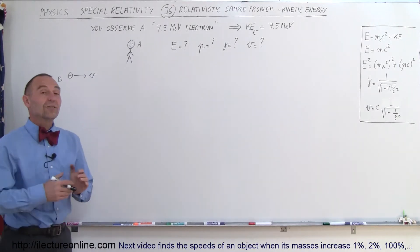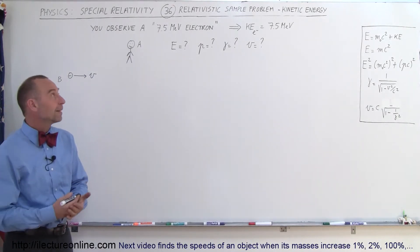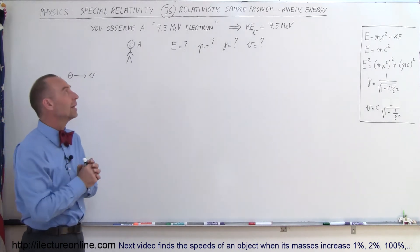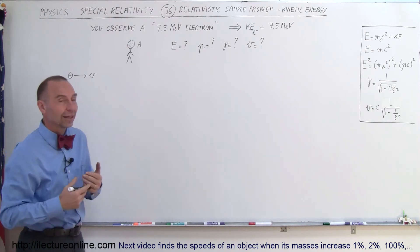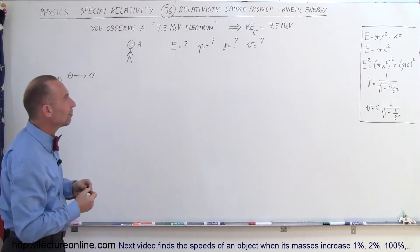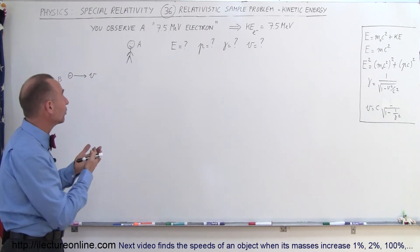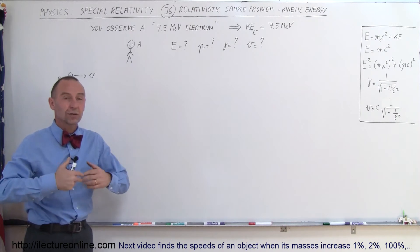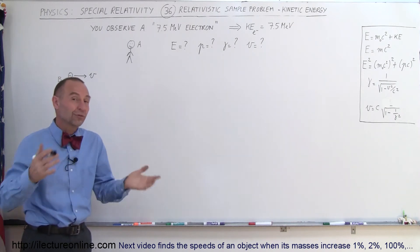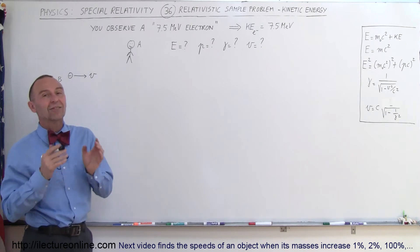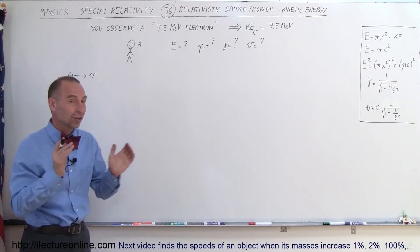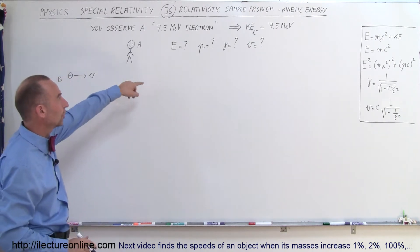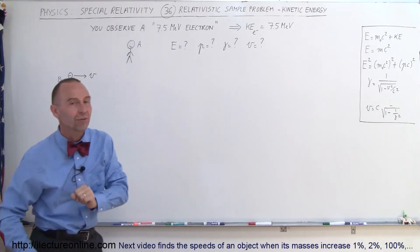Welcome to Electron Online. Let's do an example dealing with kinetic energy. Let's say that you're observing an electron that's whizzing by you at very high speed, and you find out that it has kinetic energy equal to 7.5 MeVs. When you hear the term you're observing a 7.5 MeV electron, that means it has 7.5 MeVs of kinetic energy — not the total energy, only the kinetic energy.